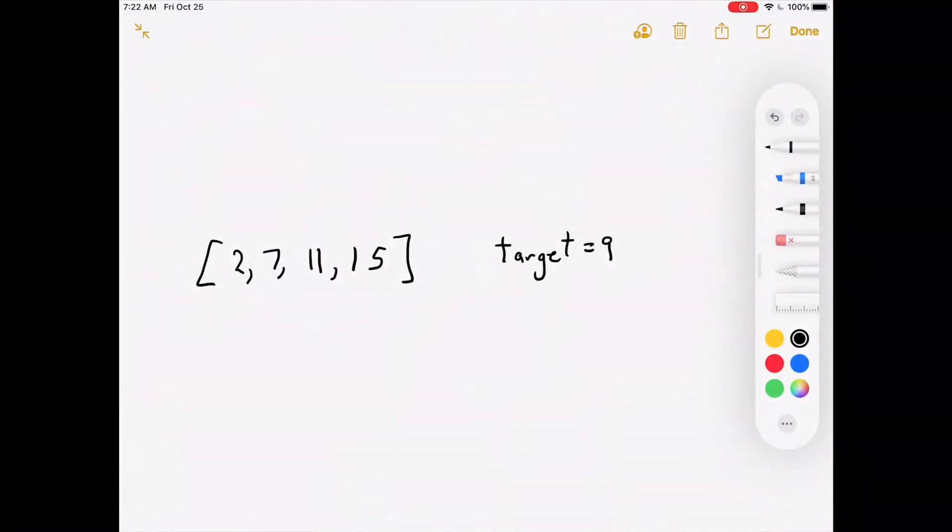All right, so the key to solving this problem is to use two different pointers at once. And by pointer, I don't mean real pointers like in C++. I just mean references to two different elements at once. So what you're going to do is you're going to put one pointer at the start of the array, then you put the other pointer at the end of the array, and then you add up those two elements.